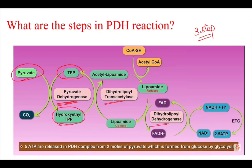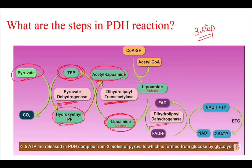In the second step, catalyzed by the enzyme dihydrolipoil transacetylase, hydroxyethyl TPP is converted in the presence of oxidized lipoamide to acetyl lipoamide, and TPP is regenerated. The acetyl group from acetyl lipoamide is then transferred to coenzyme A to form acetyl-CoA. After this transfer, the lipoamide returns to its reduced state.